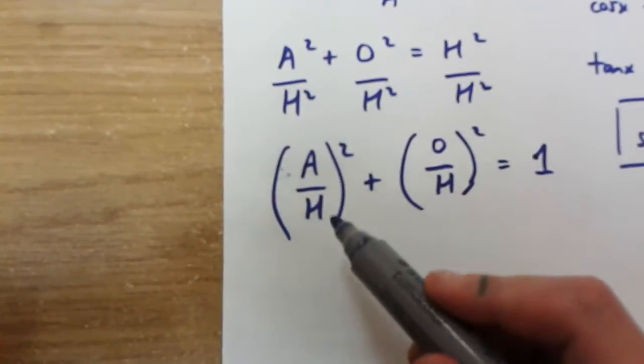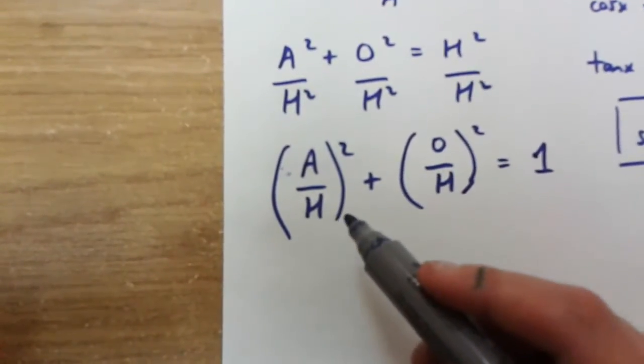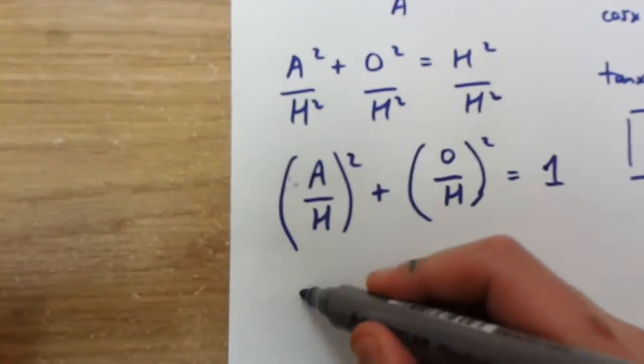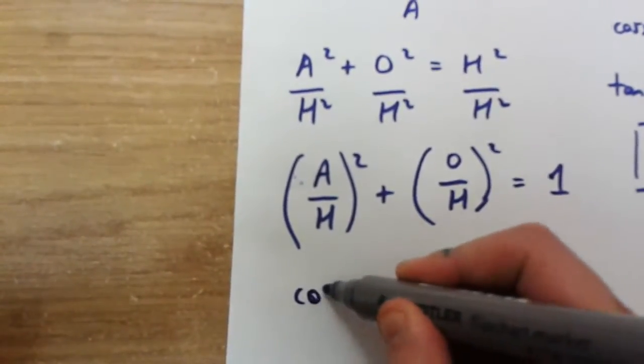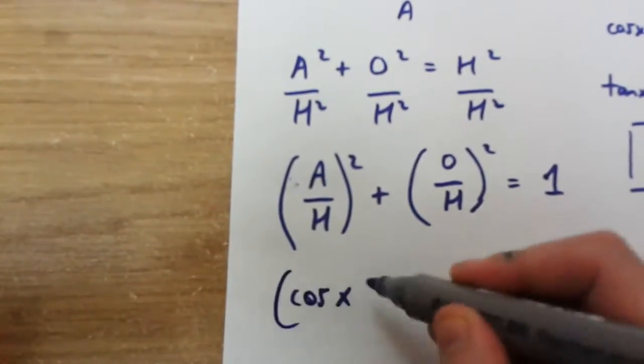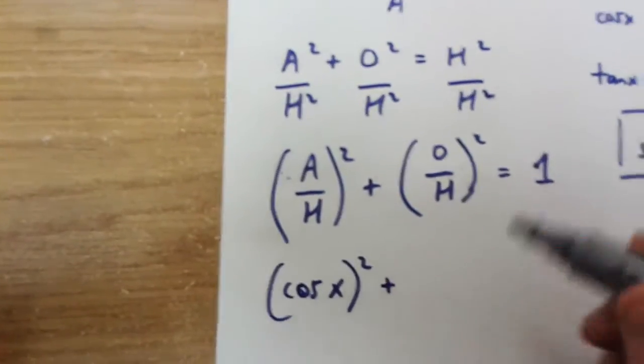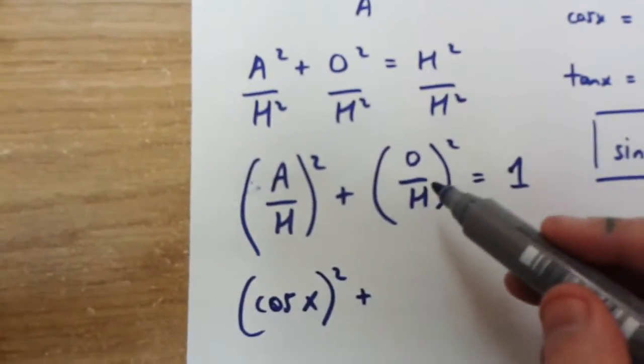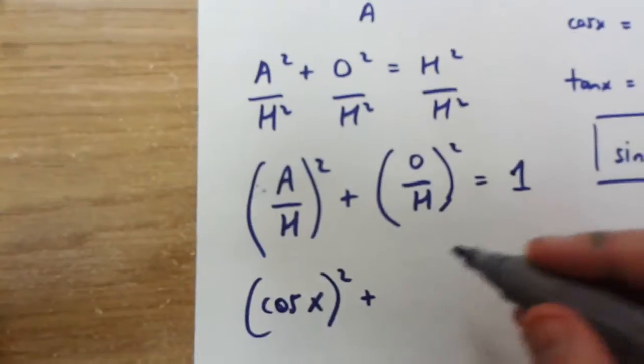Adjacent over hypotenuse is actually cos x, and opposite over hypotenuse is sin x.